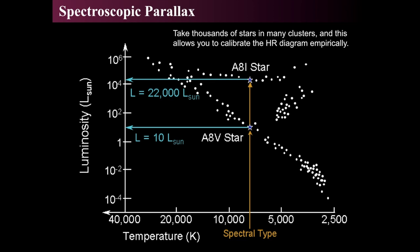You calculate exactly how bright it would be compared to the Sun at a given distance, given that it is ten solar luminosities. You might also encounter a star that's also spectral class A, subclass 8, but it is a bright giant — luminosity class 1 — at 22,000 times the luminosity of the Sun. So now we have two stars with the same spectral class but different luminosity classes, which lead to incredibly different luminosities and therefore different distances if you measure them to be the same brightness.